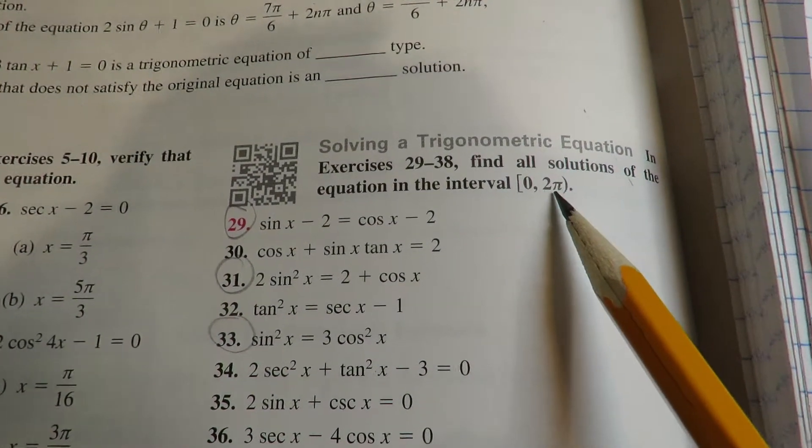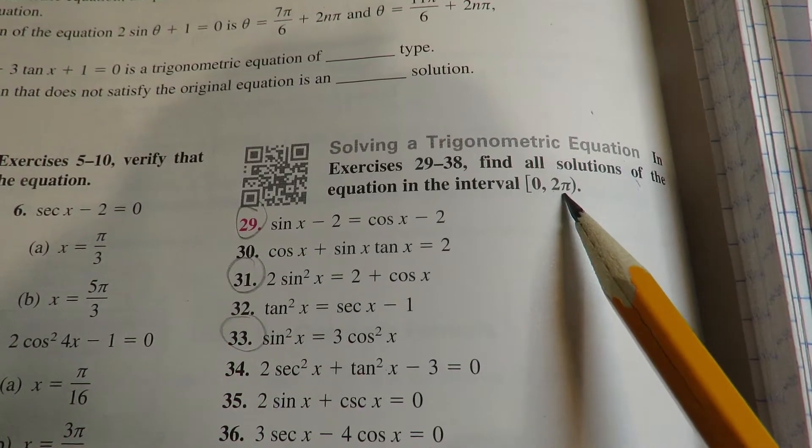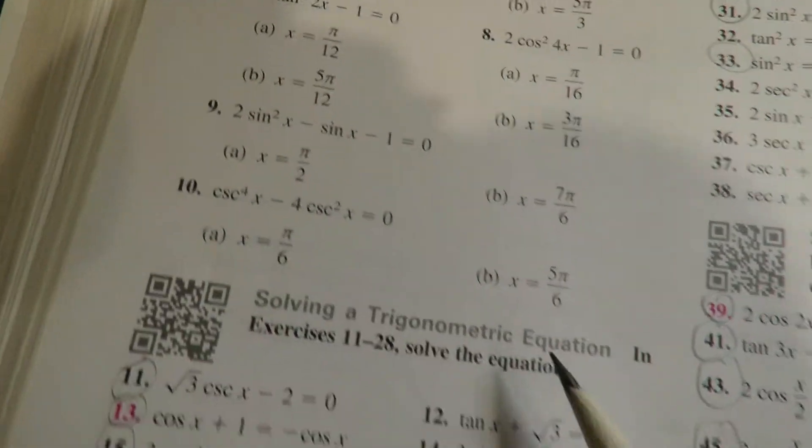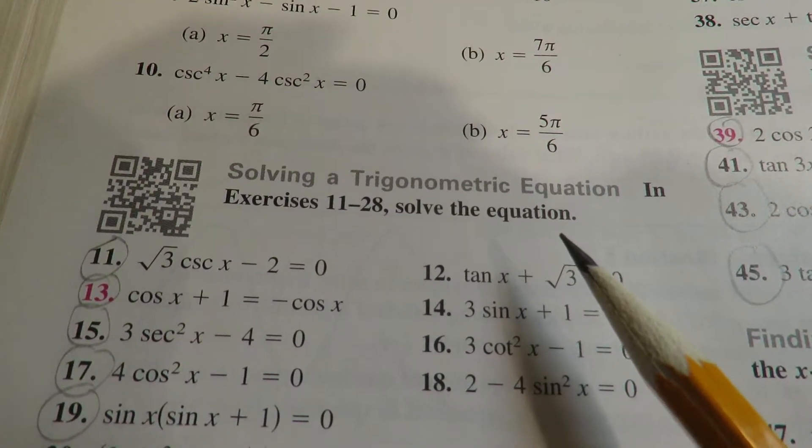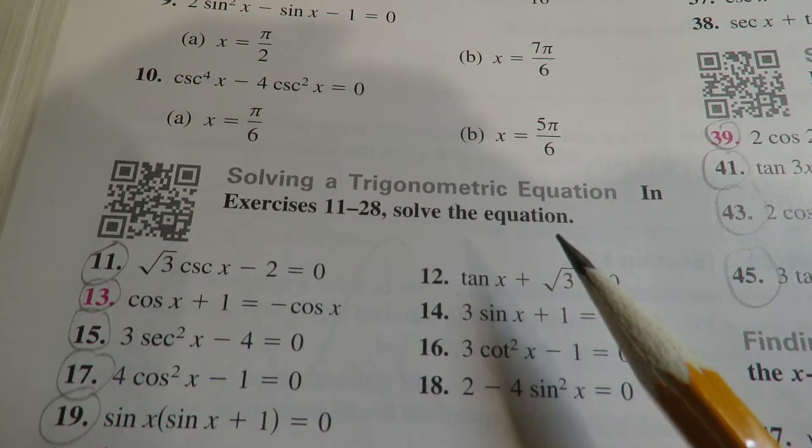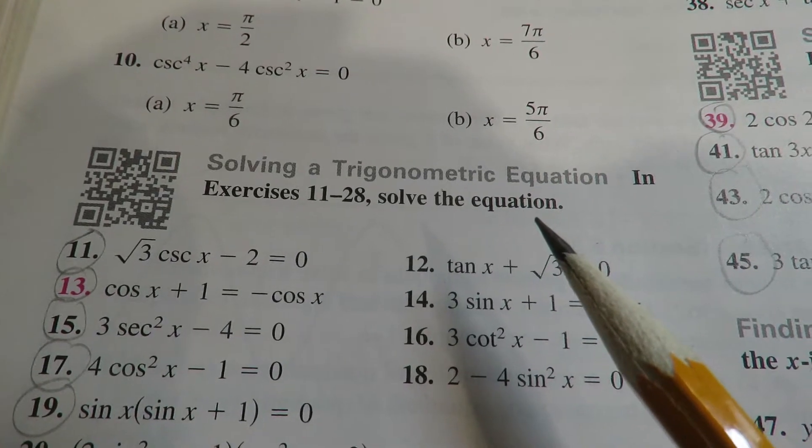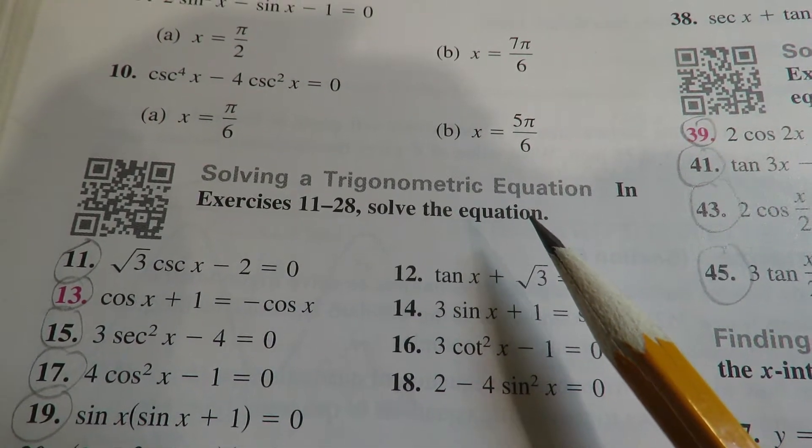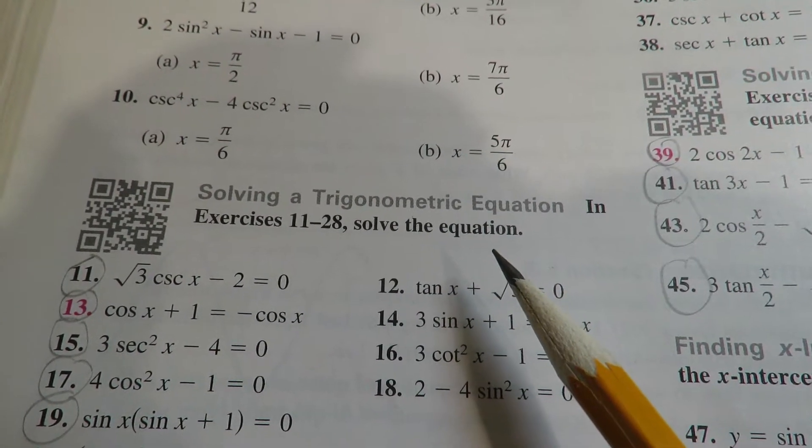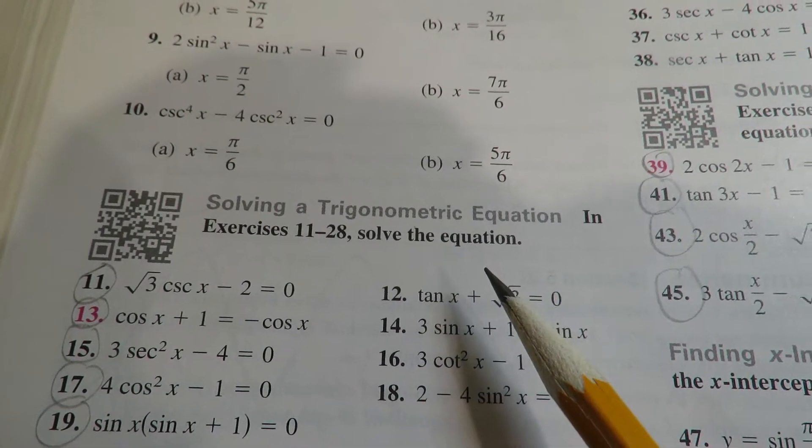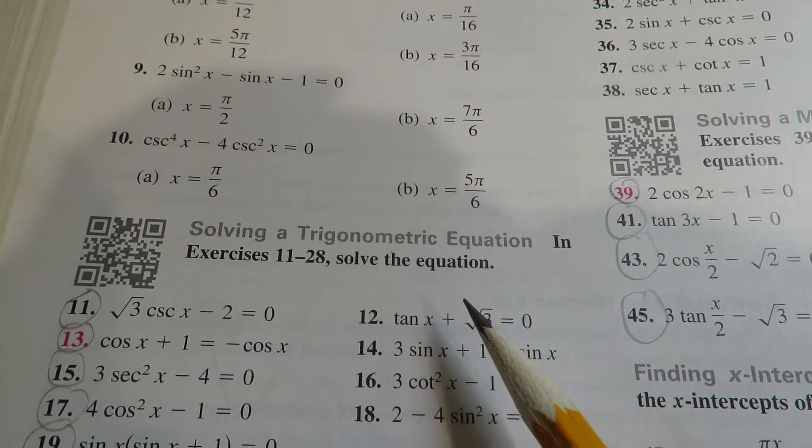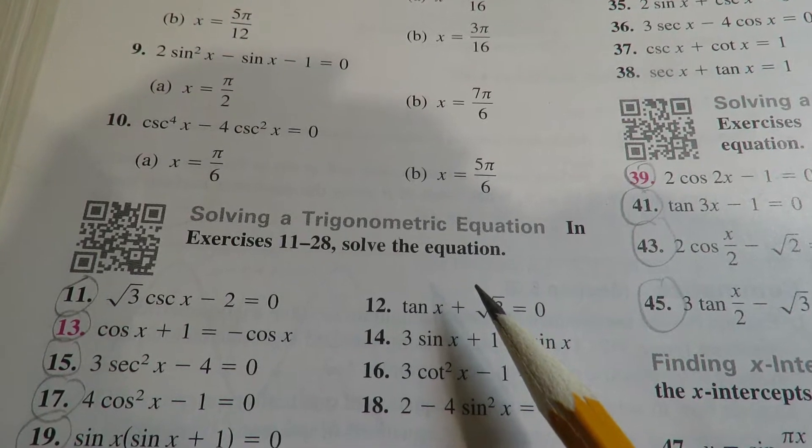If you're solving it on an interval, you're just going to write what the distinct specific solutions are. If it's solve the equation, it's for all, it's for the whole number line and it's impossible to list an infinite amount of answers. So what we do is we write an equation that would generate an infinite amount of answers.